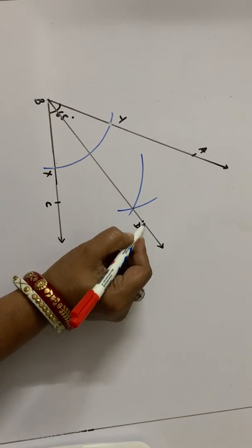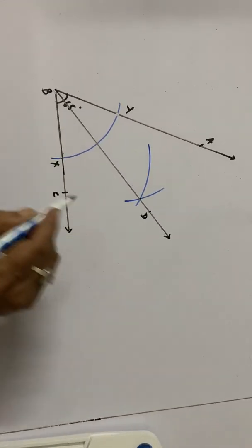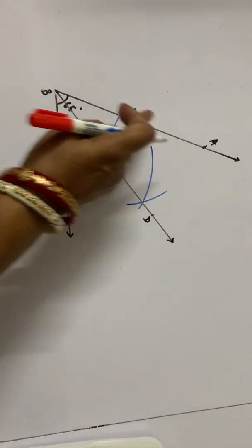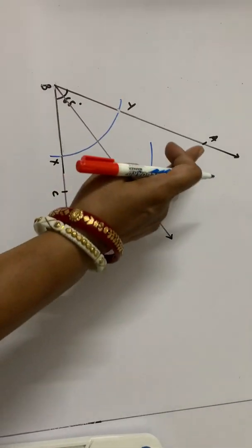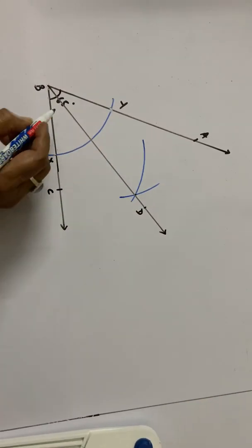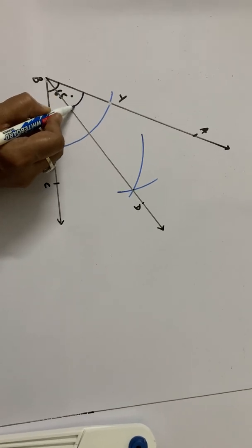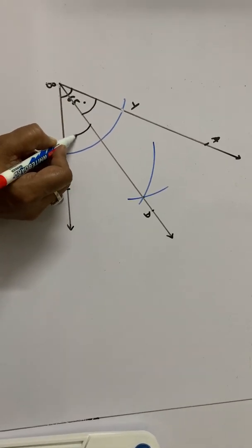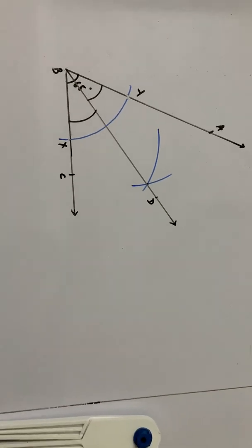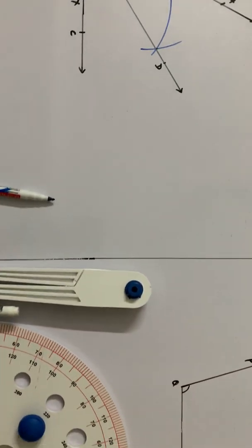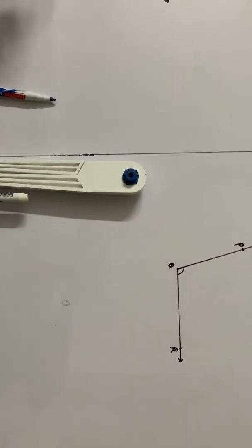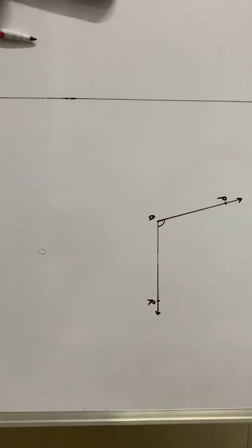Anywhere on this ray, we will take a point D. BD is the bisector of angle ABC. It divides the angle ABC into two congruent angles. That is, this angle will be congruent to this angle. Now, let us learn to draw congruent angles.